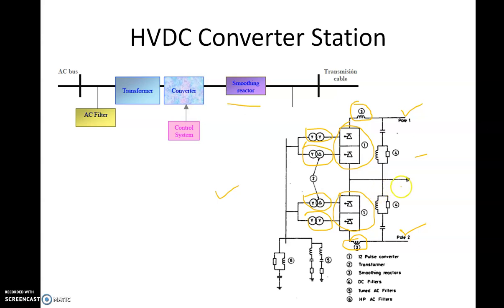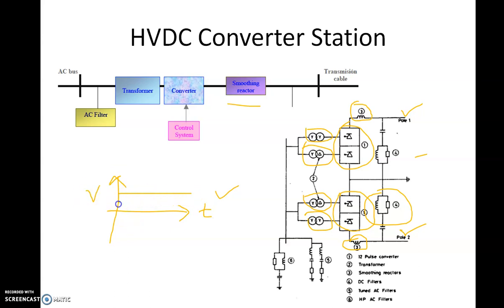The next components are the DC filters. Whatever conversion you have done from AC to DC is not always ripple-free — there are ripples in the output. Ideal DC would be a constant line with respect to time, but practically you will have a waveform that is unidirectional but has ripples. To solve this ripple issue, we need the DC filters.